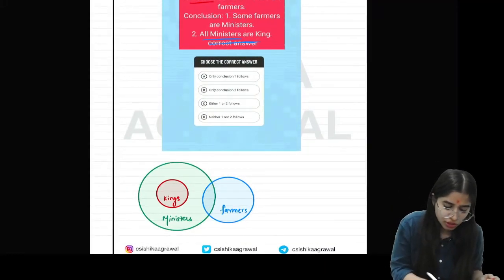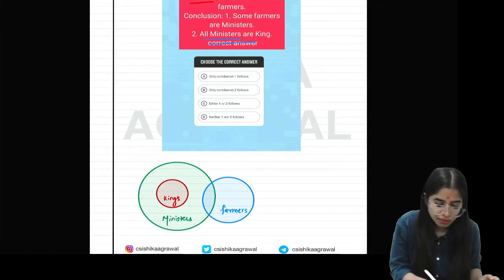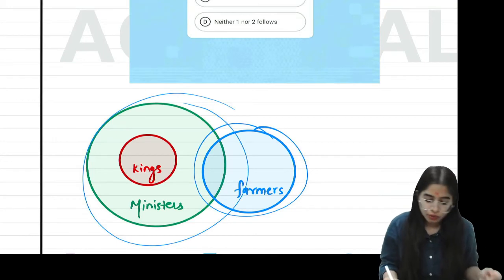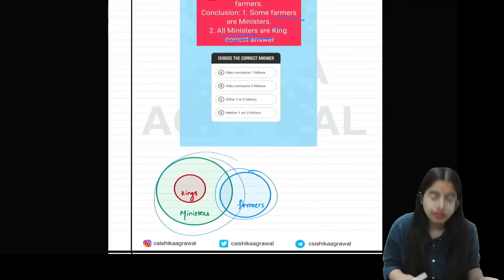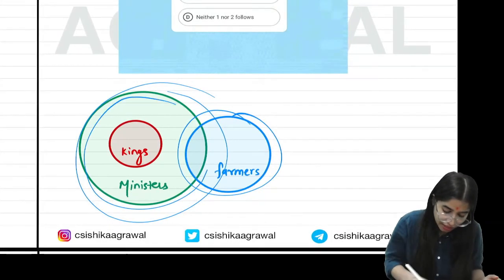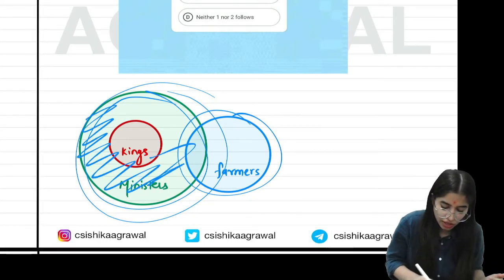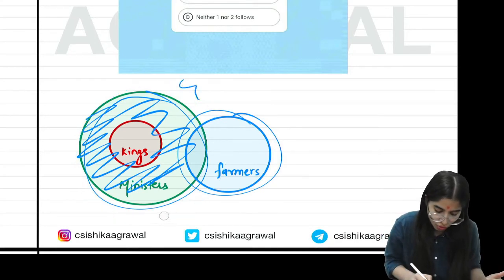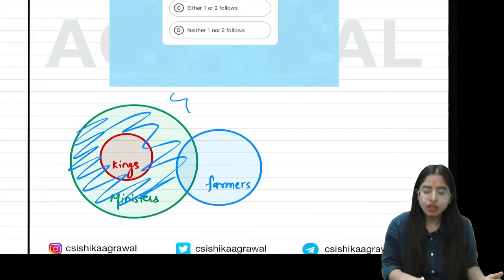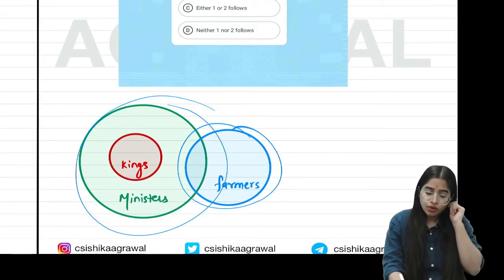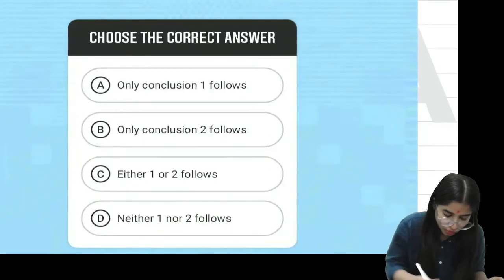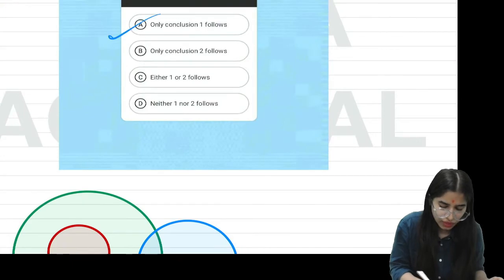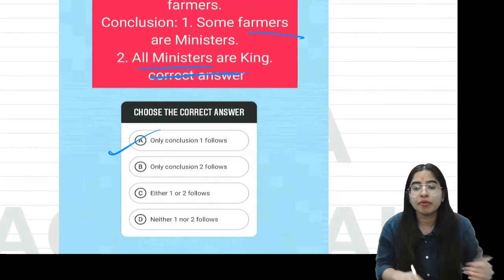Now we'll determine which conclusion is correct. First conclusion: some farmers are ministers. Yes, some farmers are ministers according to our diagram, so the first one is true. Second conclusion: all ministers are kings. Are all ministers kings? No, some ministers are not kings, so this is false. The first one is true, the second one is false. So our answer will be option A: only conclusion 1 follows.